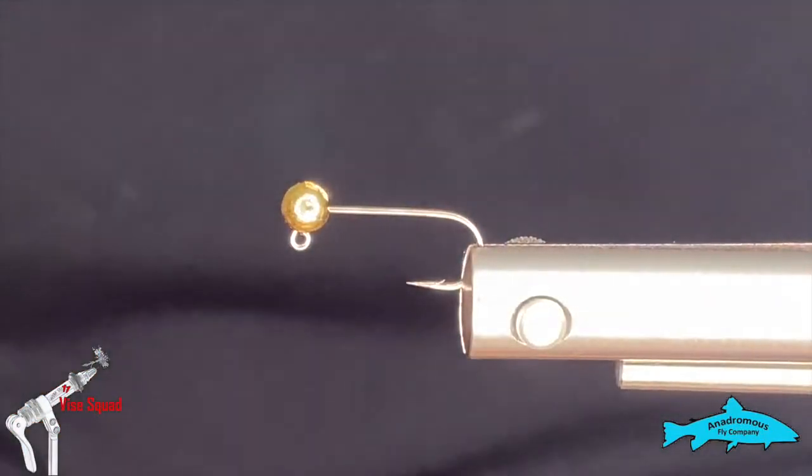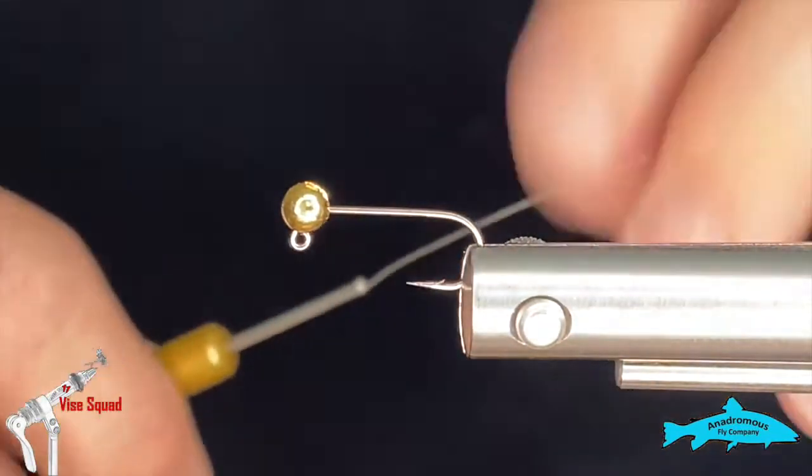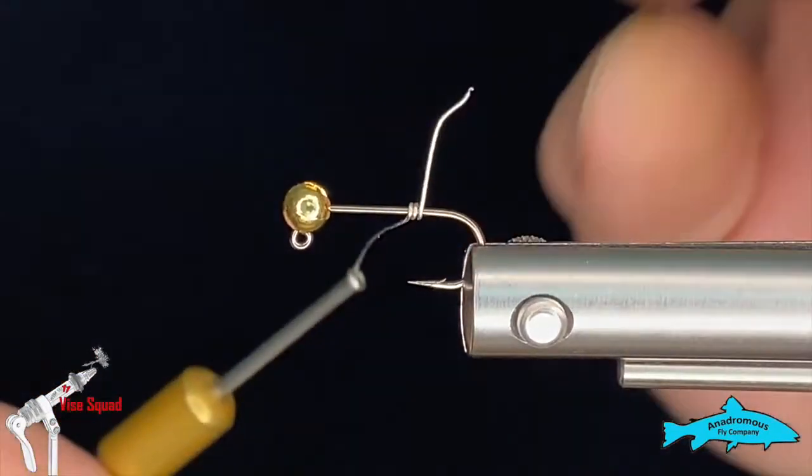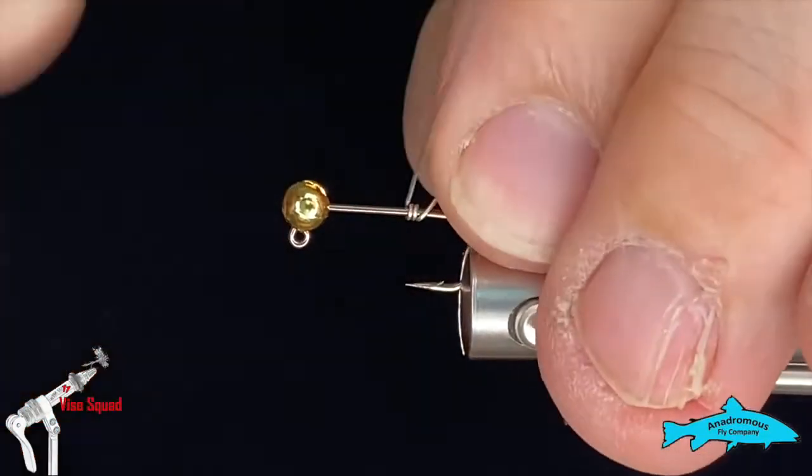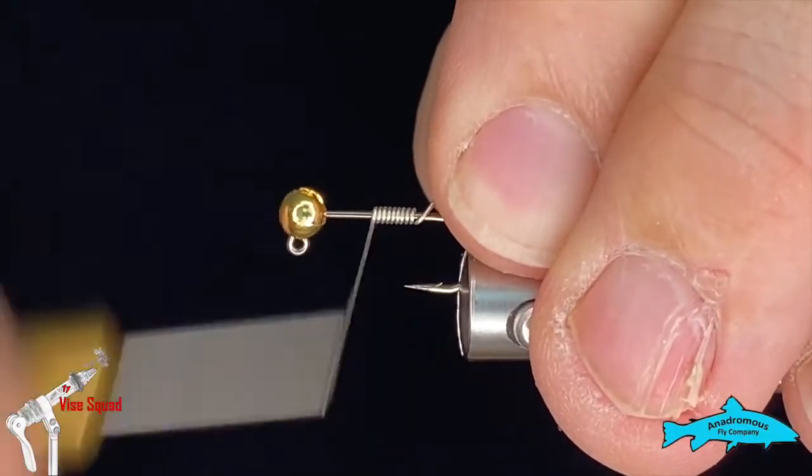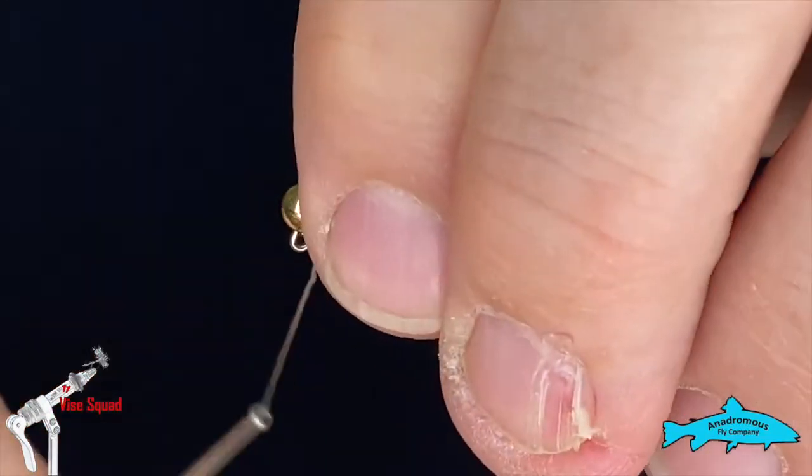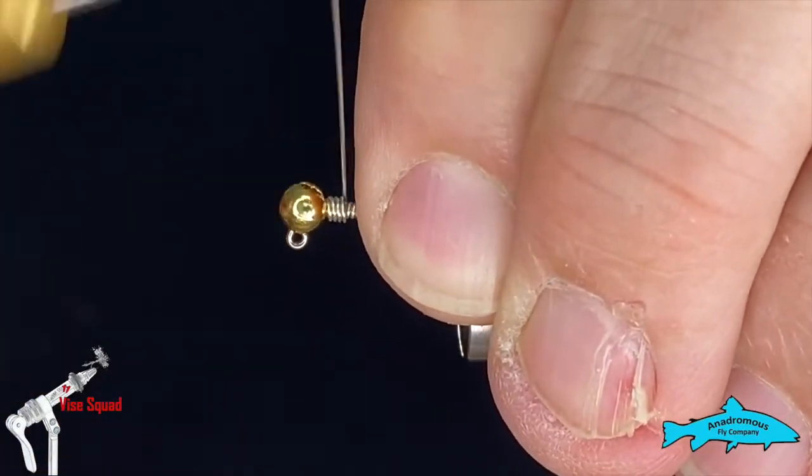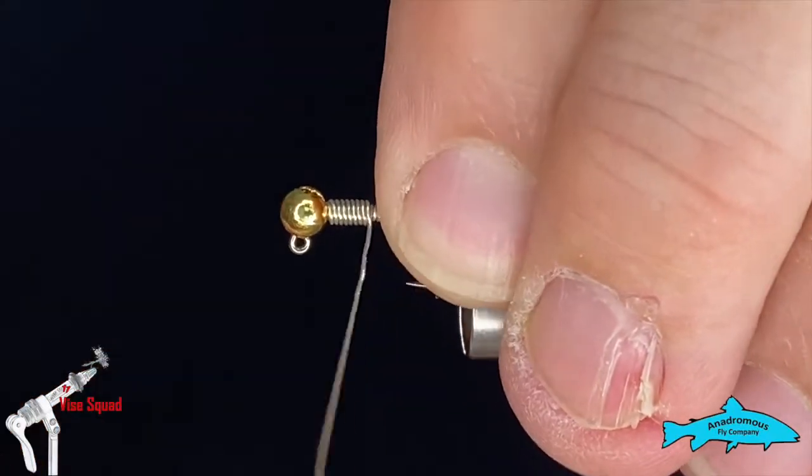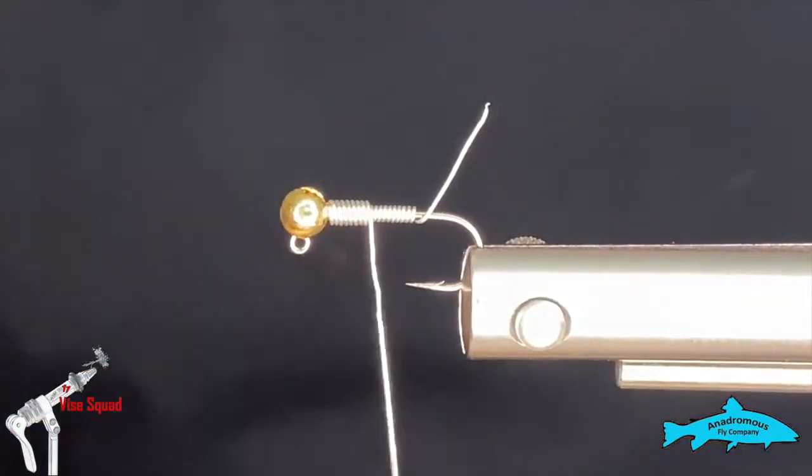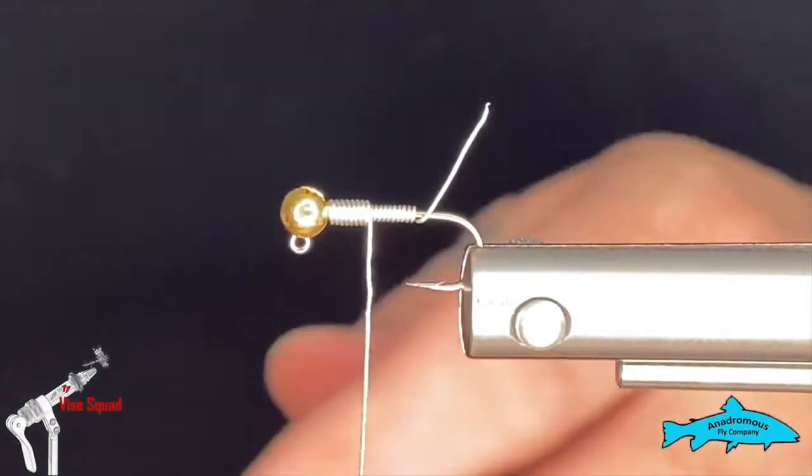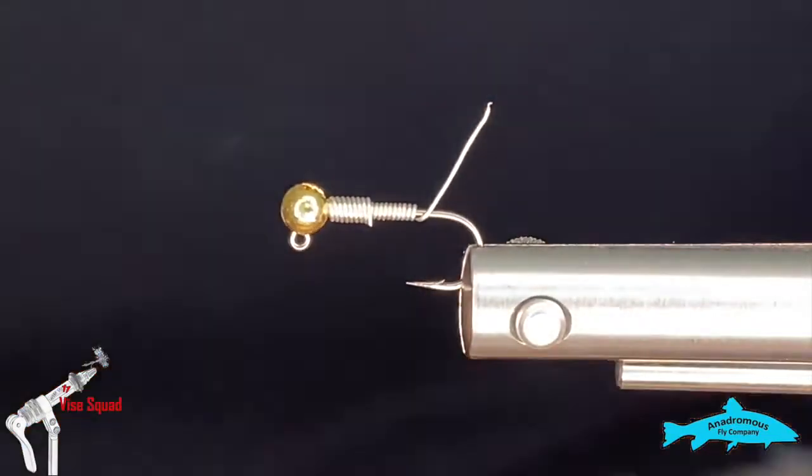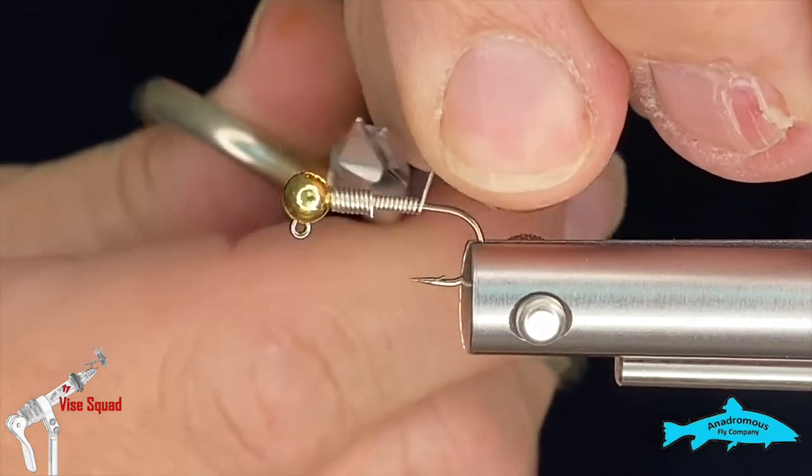Get it situated right. We're going to grab some 0.015 lead-free wire. I'm going to start just behind the hook point because I want to have some space here to tie some biots in at the back end. So we'll run one layer up and then we'll bring it back five or six or seven wraps behind the bead and that should make it plenty heavy. I'm going to grab our old worn-out scissors and cut that lead out. You don't want to use our good scissors.